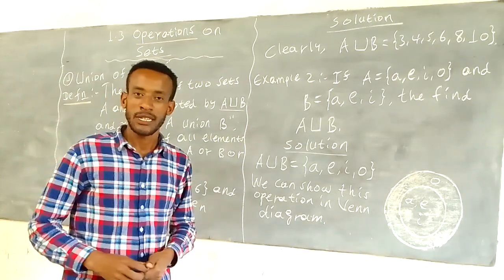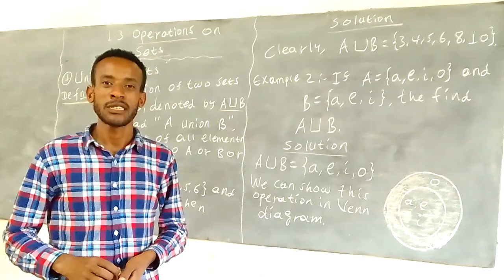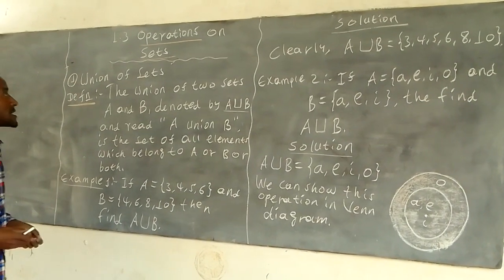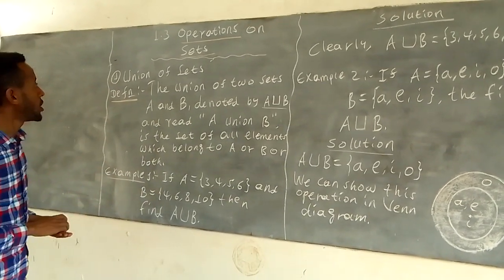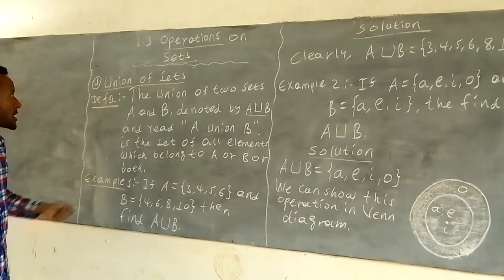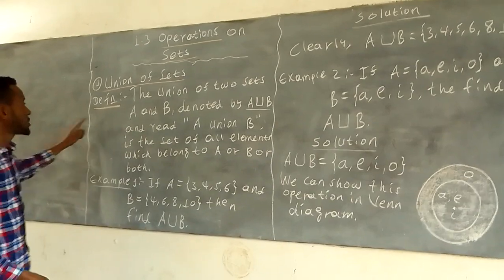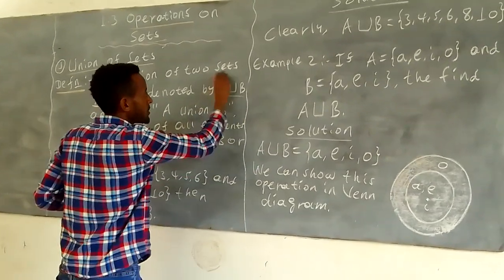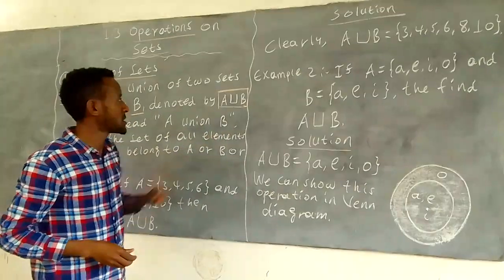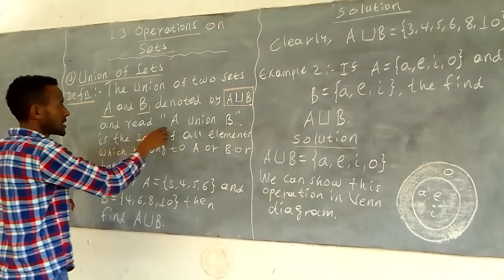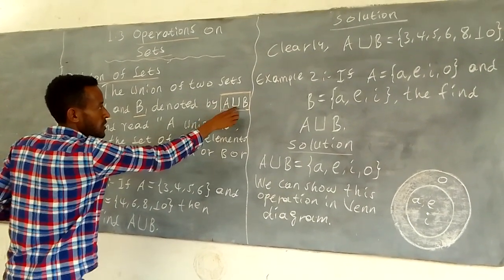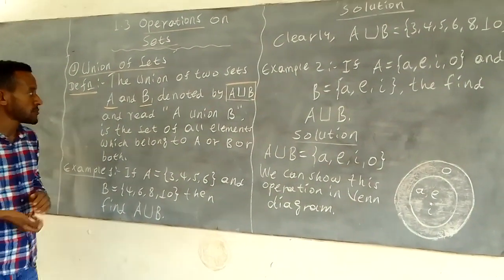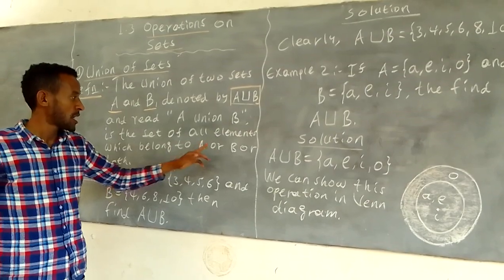We are going to talk about operations on sets. The first one is the union of sets — the union of two sets, set A and B, denoted by A union B. This symbol represents union. A union B is the set of all elements which belong to A or B.